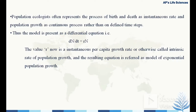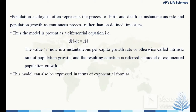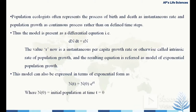Exponential population growth is represented by dn/dt = r·N. This model can also be expressed in exponential form as Nt = N0·e^(rt), where N0 is the initial population at time t = 0 and e is the base of the natural logarithm.